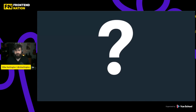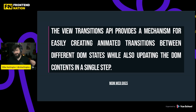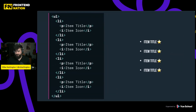Let's start by defining what view transitions are. It's a technical spec, so there are going to be some technical terms, but we can normalize that for everybody. According to MDN, the View Transition API provides a mechanism for easily creating animated transitions between different DOM states while also updating the DOM content in a single step. The simplest way to explain it is by actually seeing it in action.